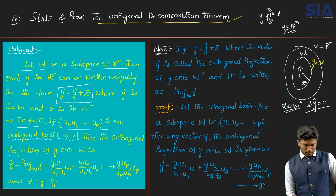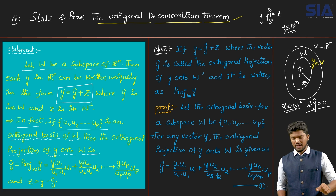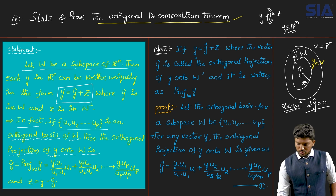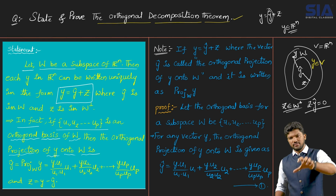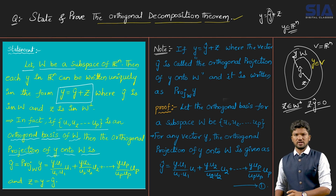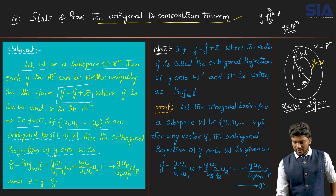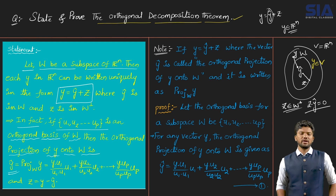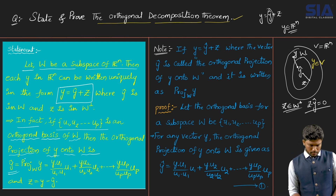The orthogonal projection of y onto W: for a point y in the vector space V equals R^n, the orthogonal projection is the image onto the subspace capital W. In real-life terms, projection is nothing but a shadow. Here, for y, the projection is y-hat. The projection of y onto capital W is given by y-hat.